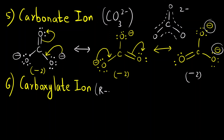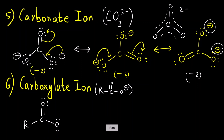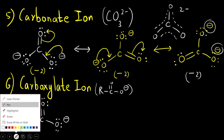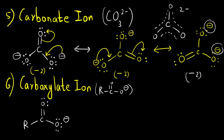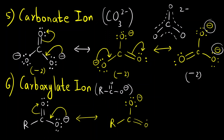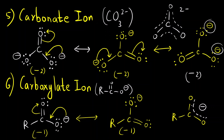Next is the carboxylate ion: R–C(=O)–O⁻. This is the conjugate base of a carboxylic acid — the species formed after removal of H⁺. Moving the lone pair on the negatively charged oxygen toward the carbon gives the resonance arrow, producing a structure with a double bond to that oxygen and a negative charge on the other oxygen. Both resonance structures have a charge of −1. The resonance hybrid is drawn with sigma bonds and a dotted line for the C–O pi electrons, with an overall charge of −1.